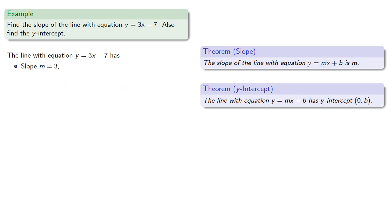y equals mx plus b. So, our slope is 3, and our y-intercept has the form 0b, and since b here is negative 7, our y-intercept is 0, negative 7.